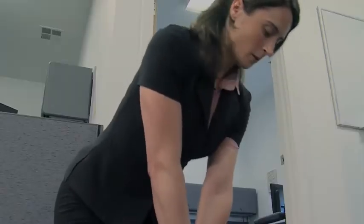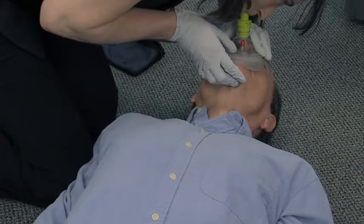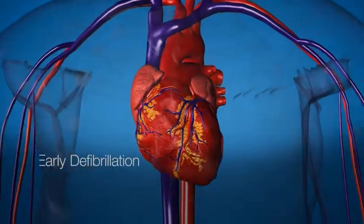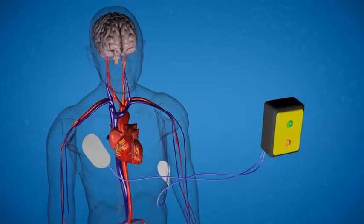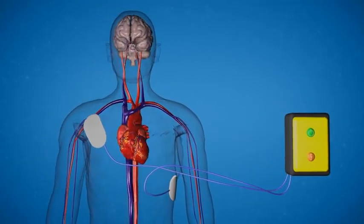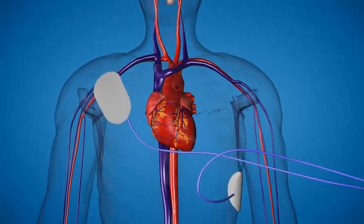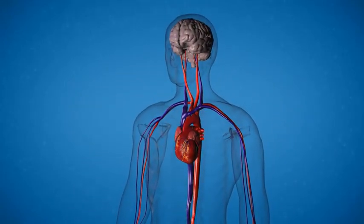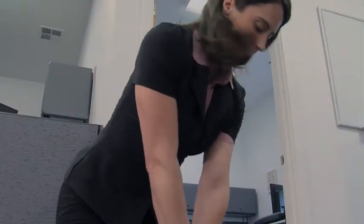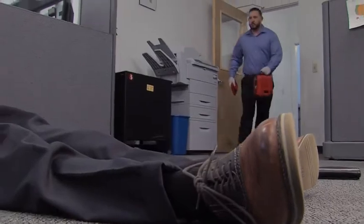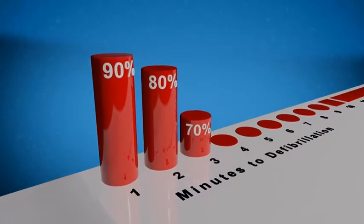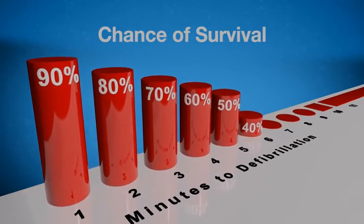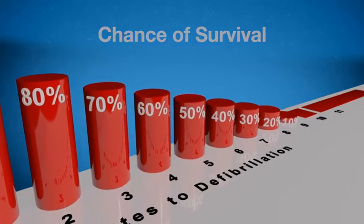CPR allows a bystander to restore limited oxygen to the brain through a combination of chest compressions and rescue breaths. However, CPR alone is not enough. The most effective way to end fibrillation is defibrillation — using a defibrillator and electrode pads applied to the chest, a controlled electric shock is sent through the heart to stop ventricular fibrillation, allowing the heart's normal electrical activity to return and restore blood flow. Successful defibrillation is highly dependent on how quickly it occurs. For each minute in cardiac arrest, the chance of surviving goes down by about 10%. After as few as 10 minutes, survival is unlikely.